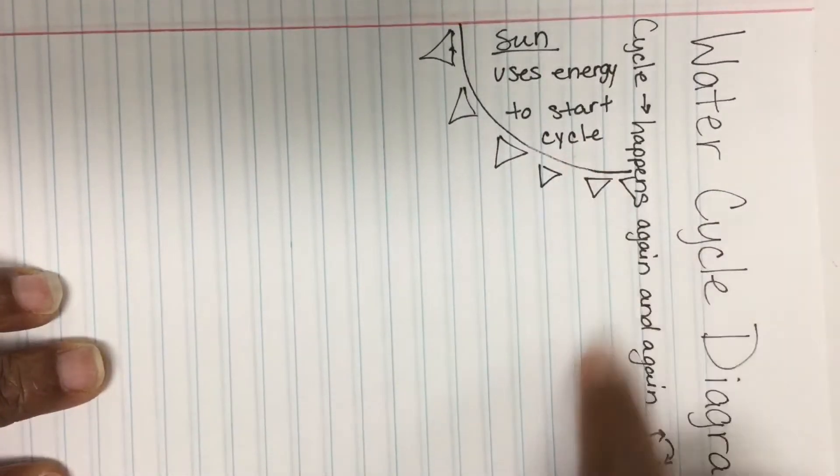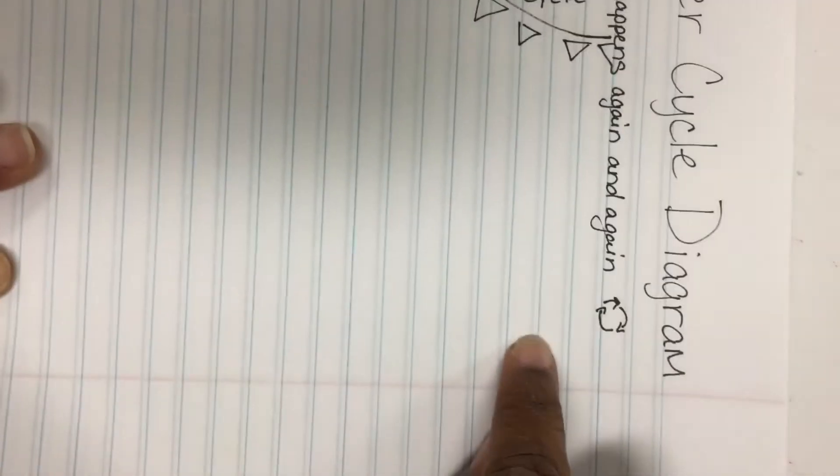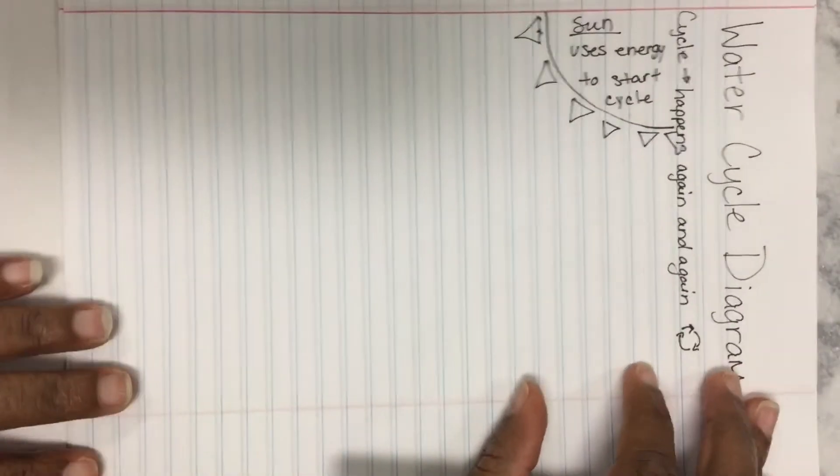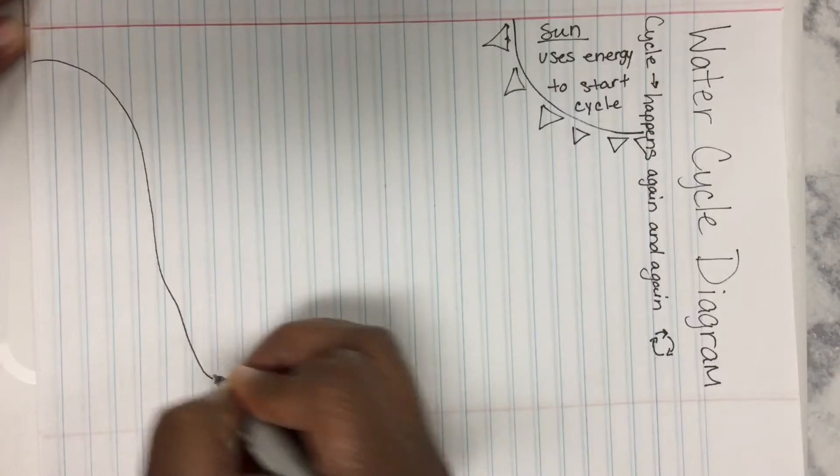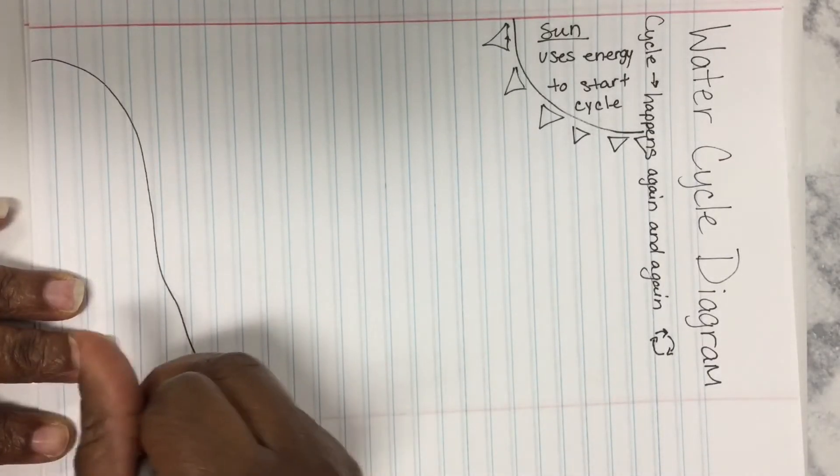When the energy from that sun, thermal energy, heats up the water, it starts to evaporate, so let's go ahead and pull you out a bit. Come over here and we'll draw a mountain or a hill, and we'll talk about that later, and some water.